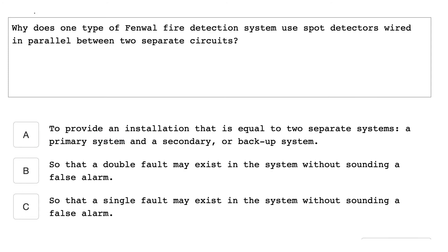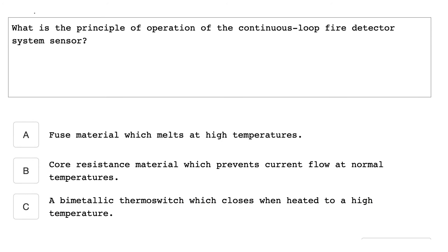Why does one type of Fenwall fire detection system use spot detectors wired in parallel between two separate circuits, so that a single fault may exist in the system without sounding a false alarm? What is the principle of operation of the continuous loop fire detector system sensor? Core resistance material which prevents current flow at normal temperatures.